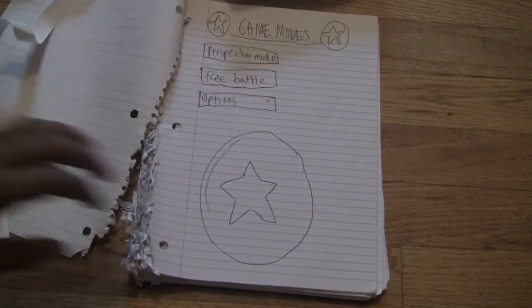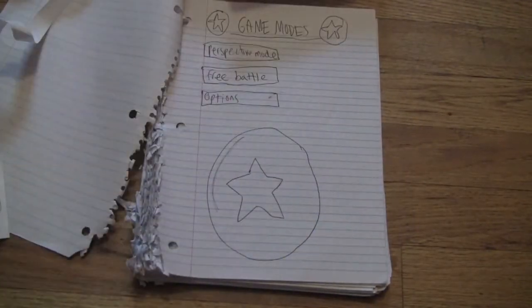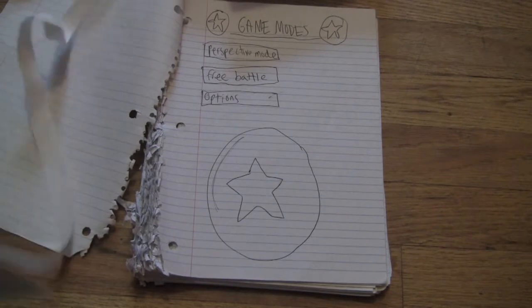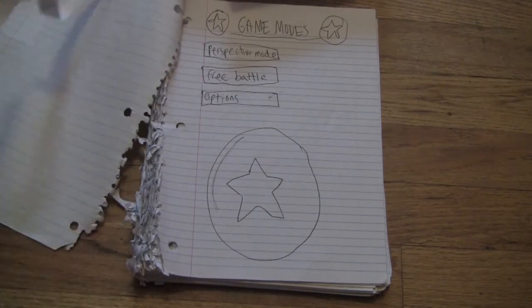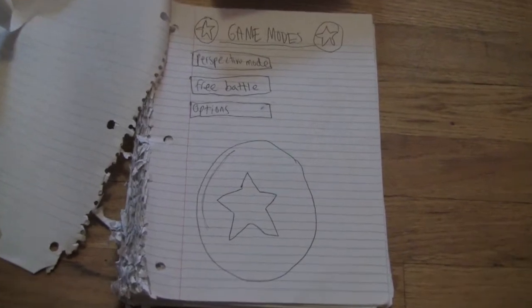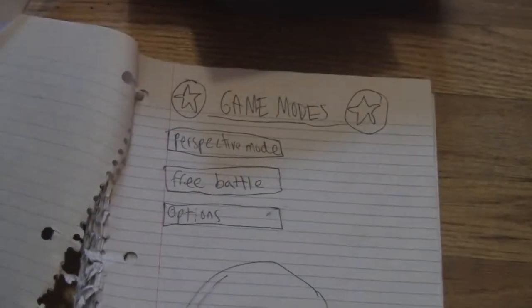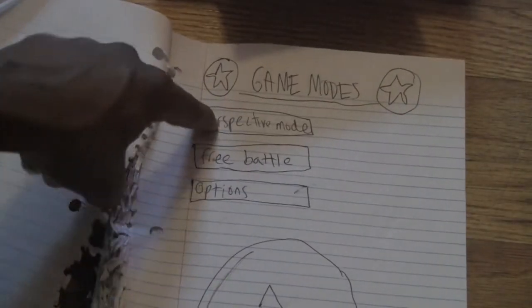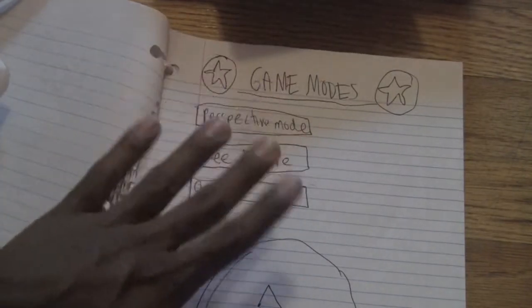Alright, as you can see here, there's a little bit of art on the game mode, but not really anything worth talking about. So if we zoom in here, we can see that the three game modes are something called perspective mode, free battle, and options.